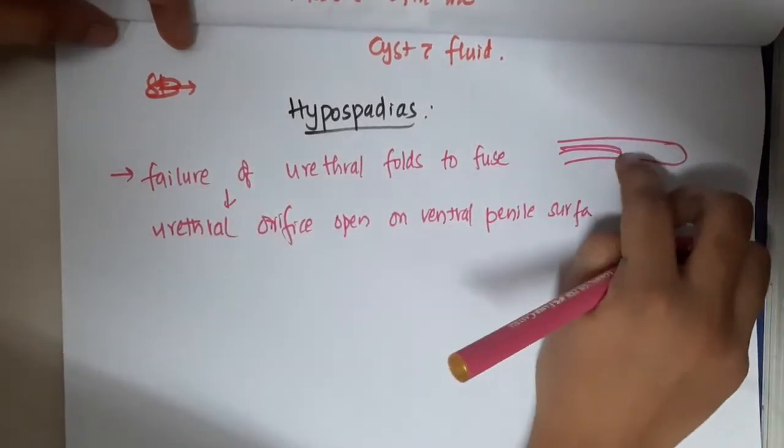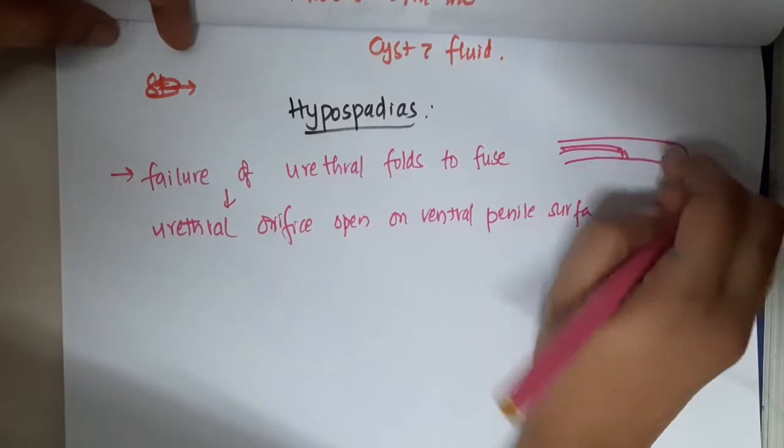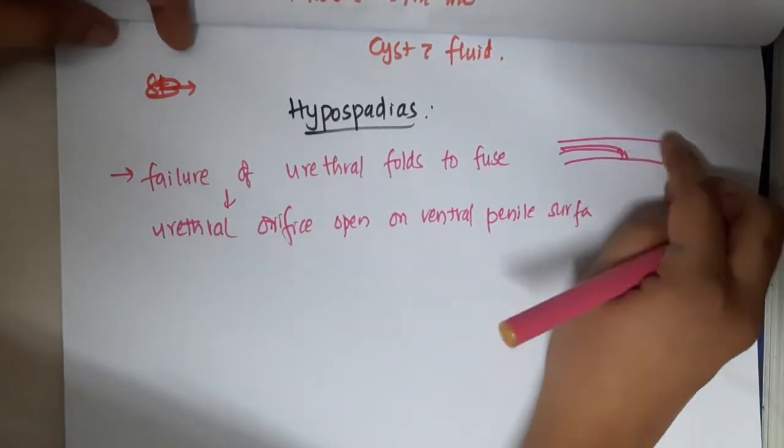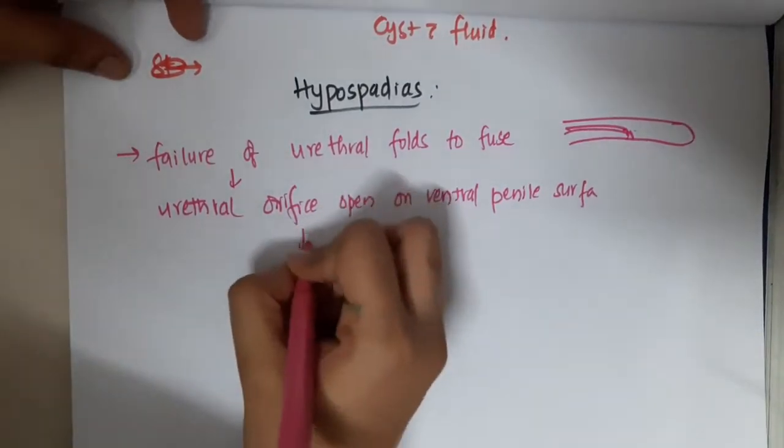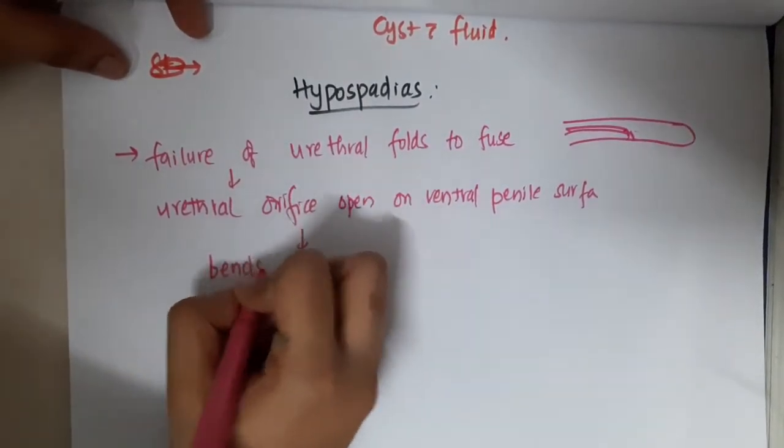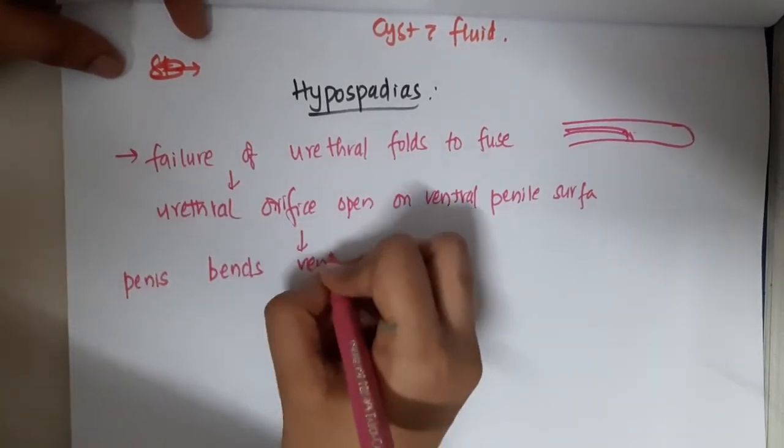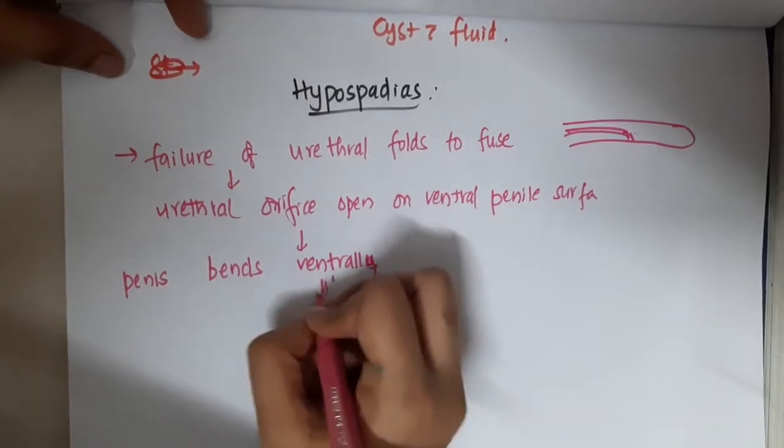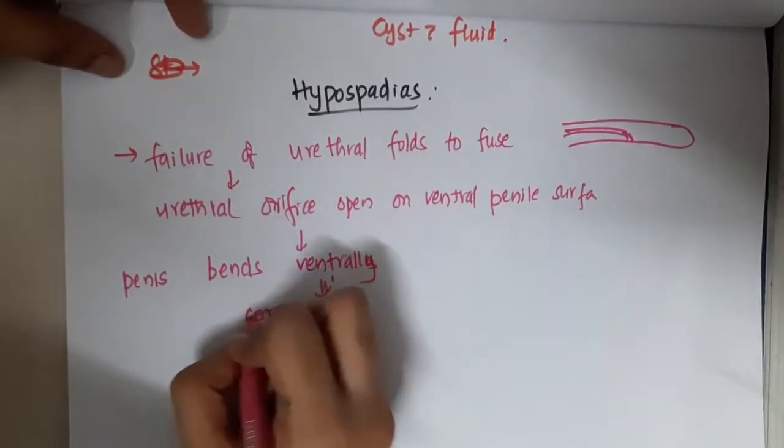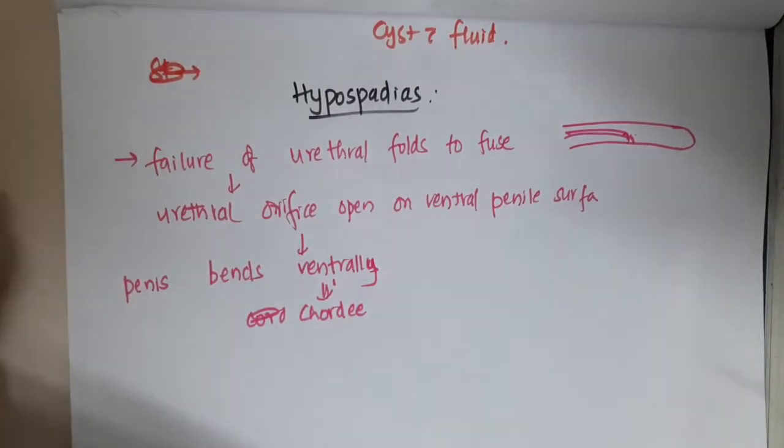Because it opens on the ventral penile surface, there is no urethra on this part. As a result, the penis has a curved structure and bends ventrally, resulting in formation of chordee. This is about hypospadias.